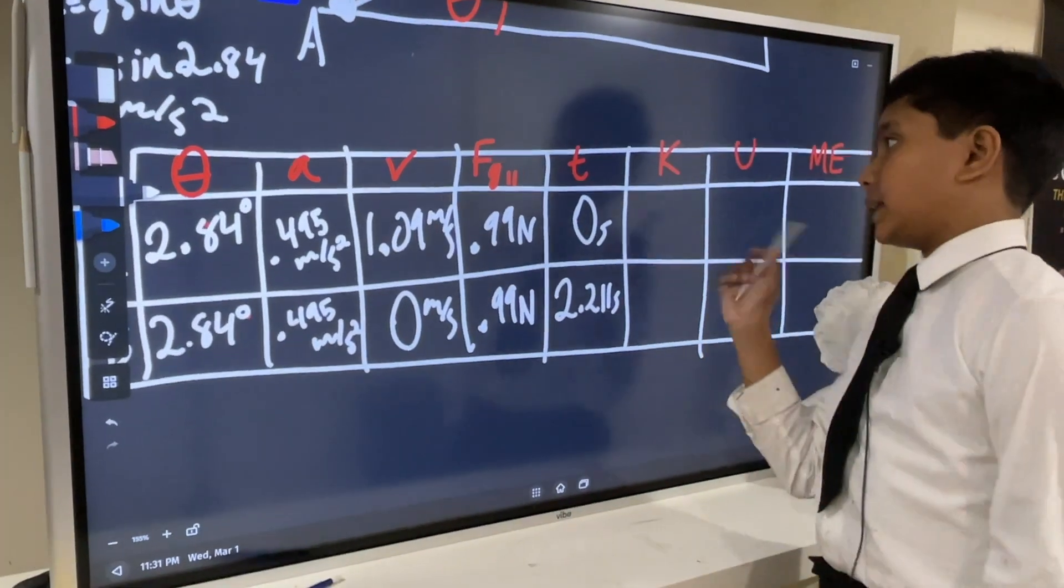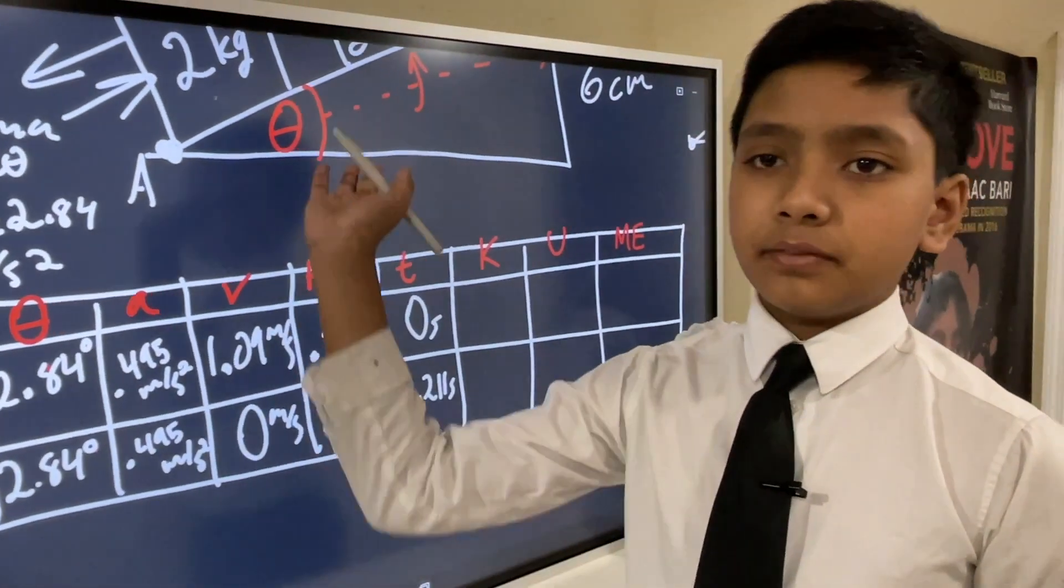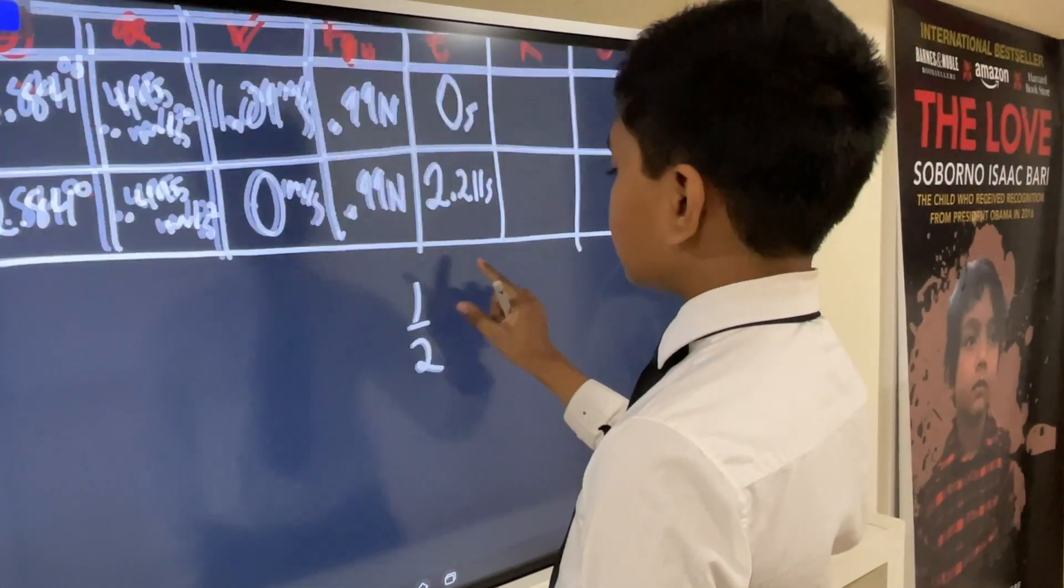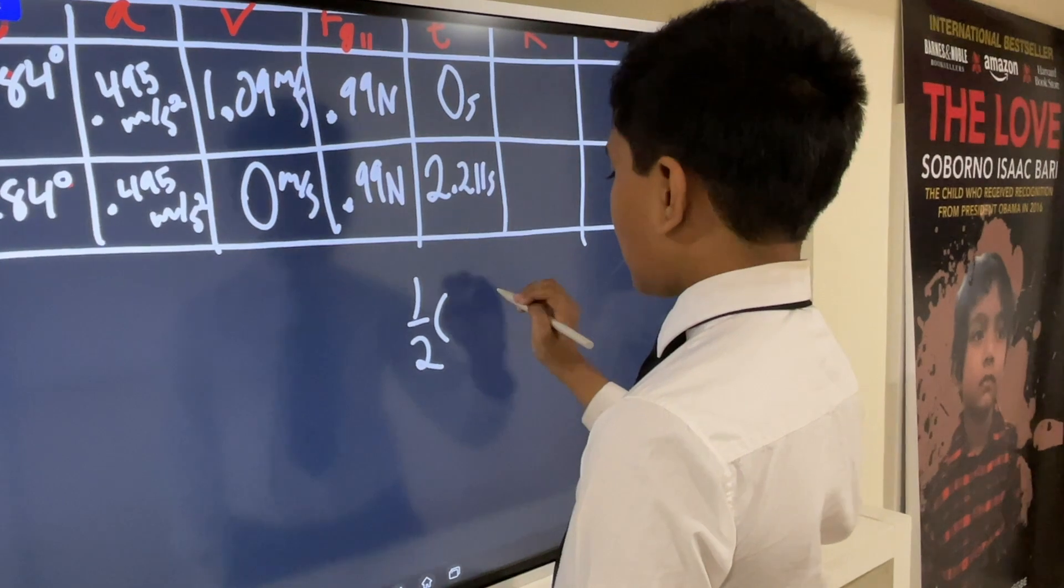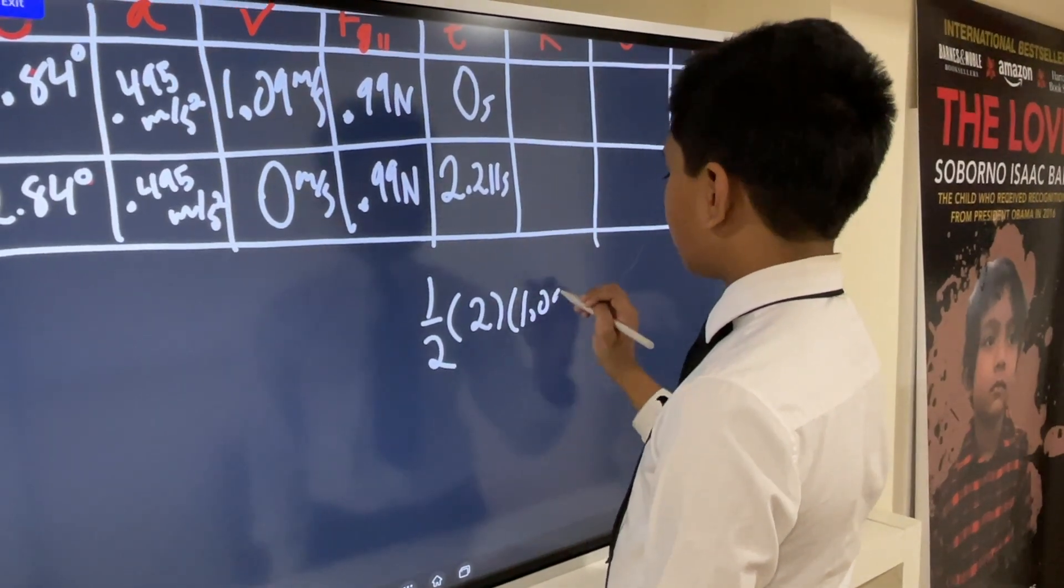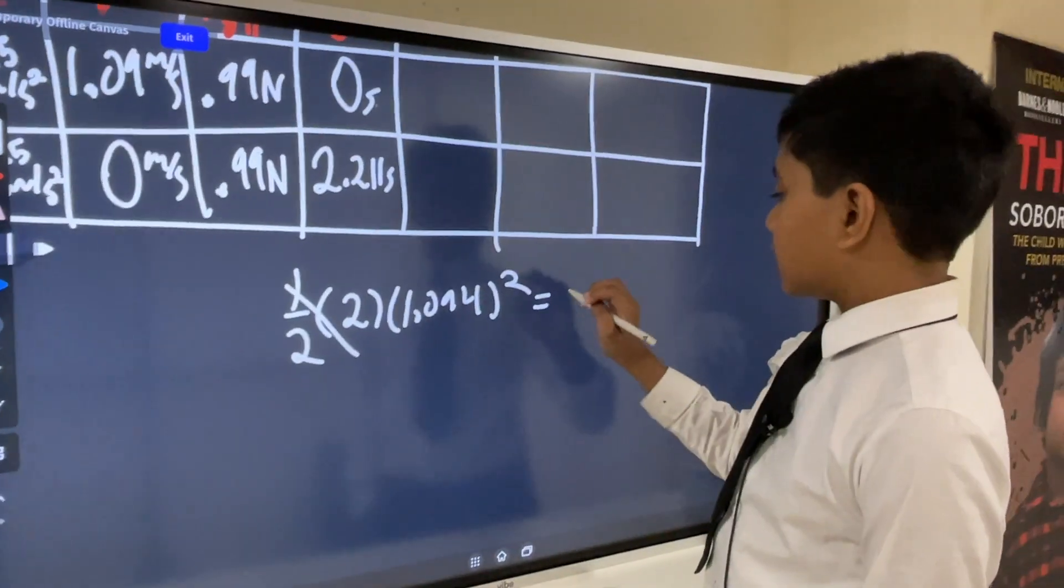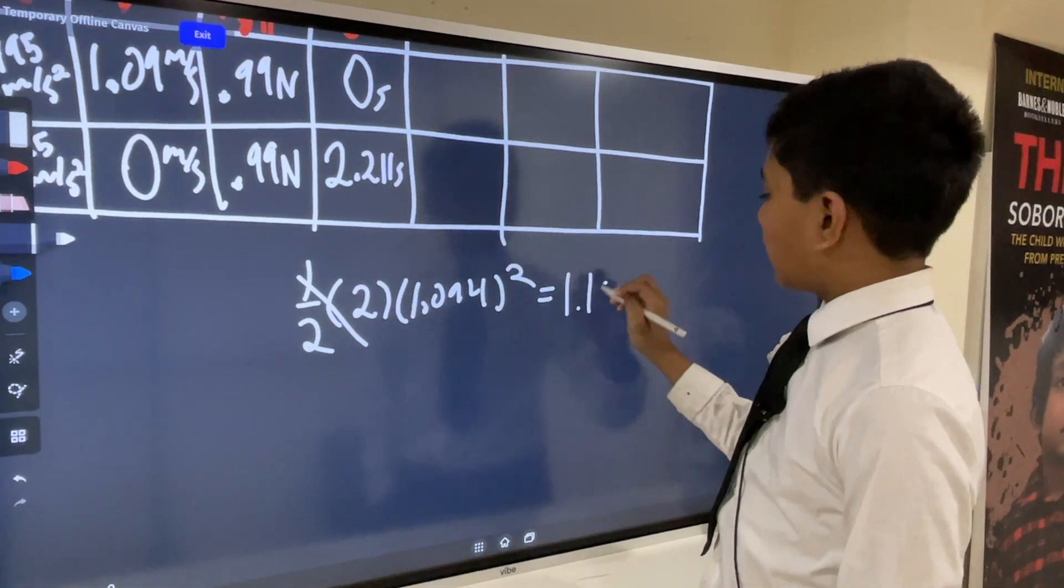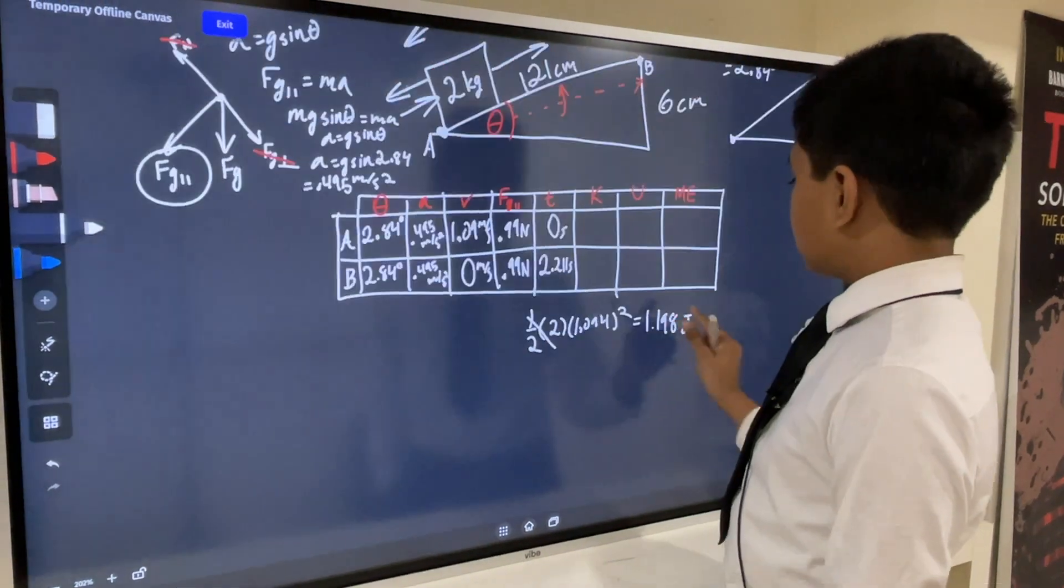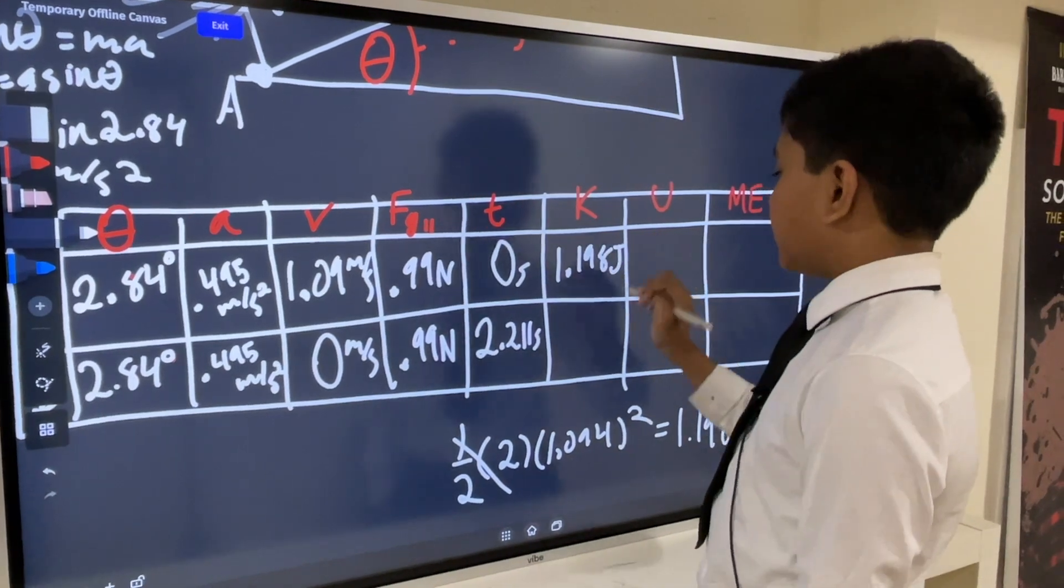What about kinetic and potential energy? Kinetic energy at A is going to be positive. We have 0.5 times M, which is 2, times 1.094 squared. Cancelling that out, this gives us 1.198. And what's that? Sorry, joules. 1.198 joules, and it's at rest at B, so 0.